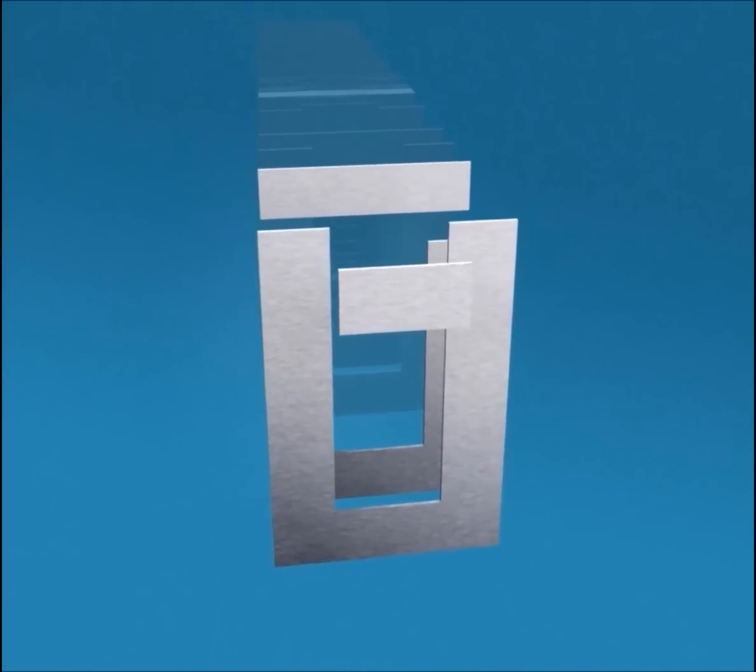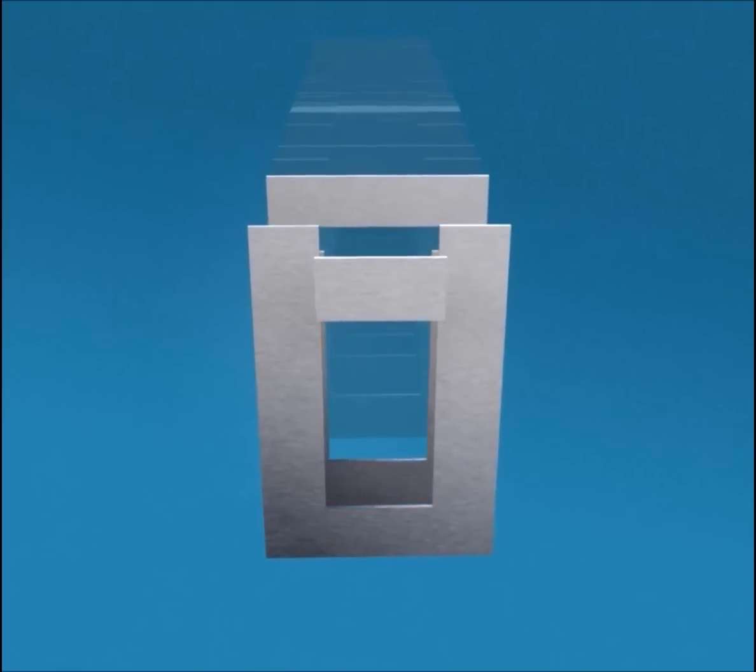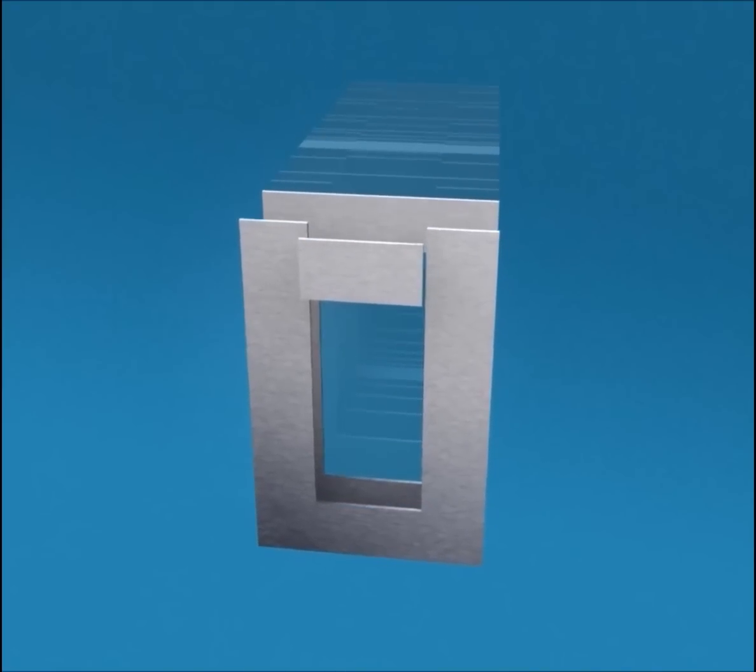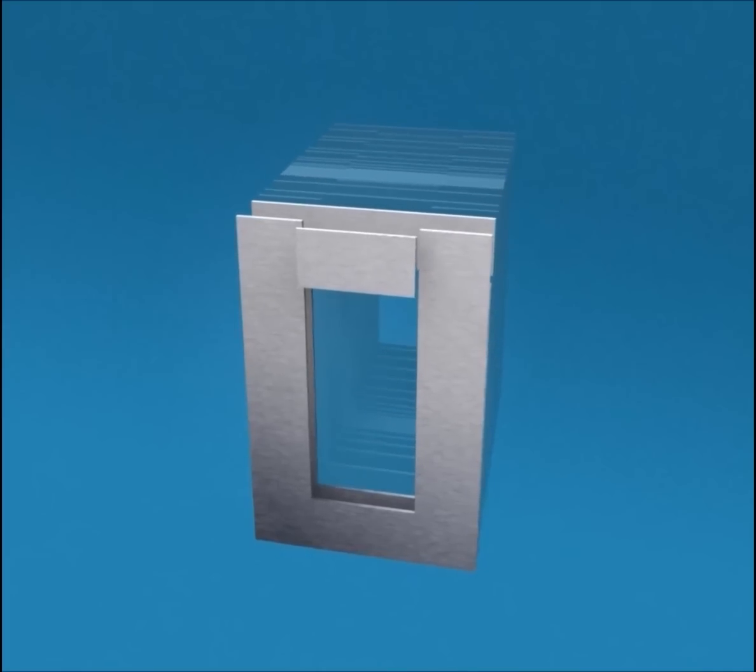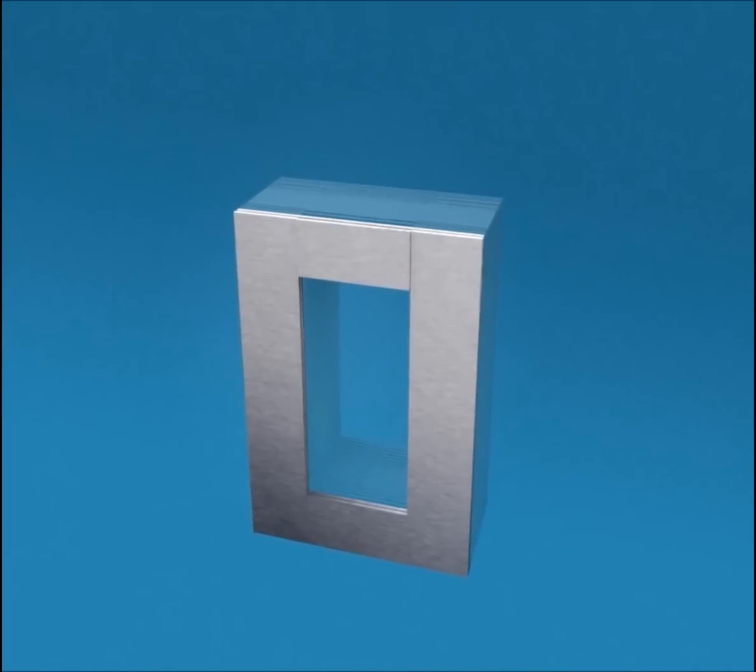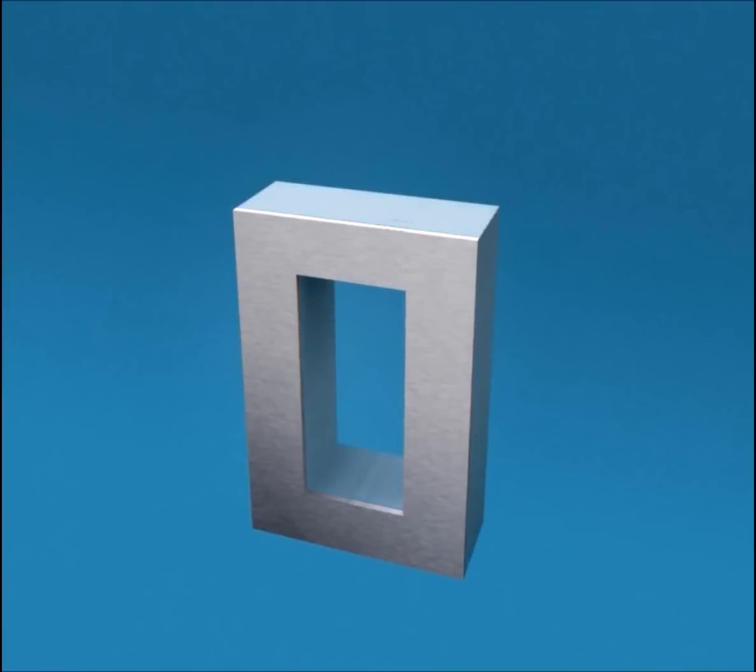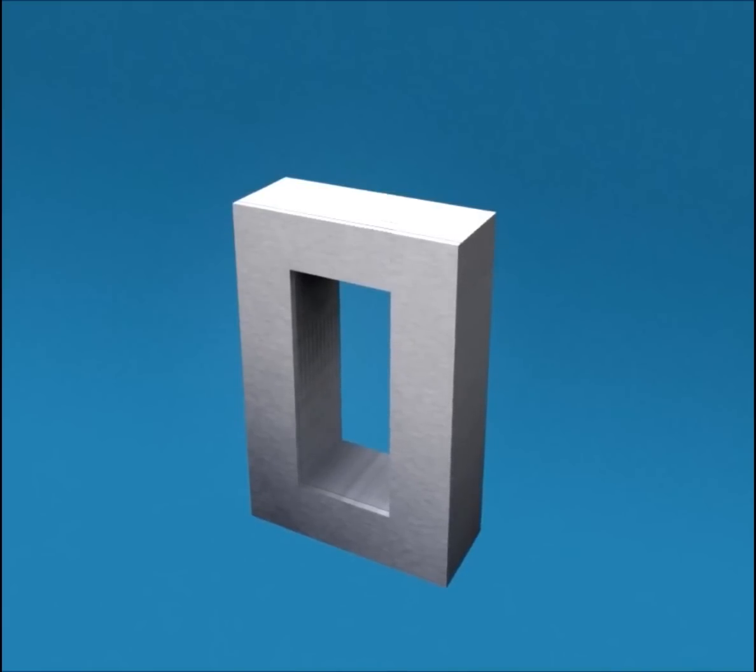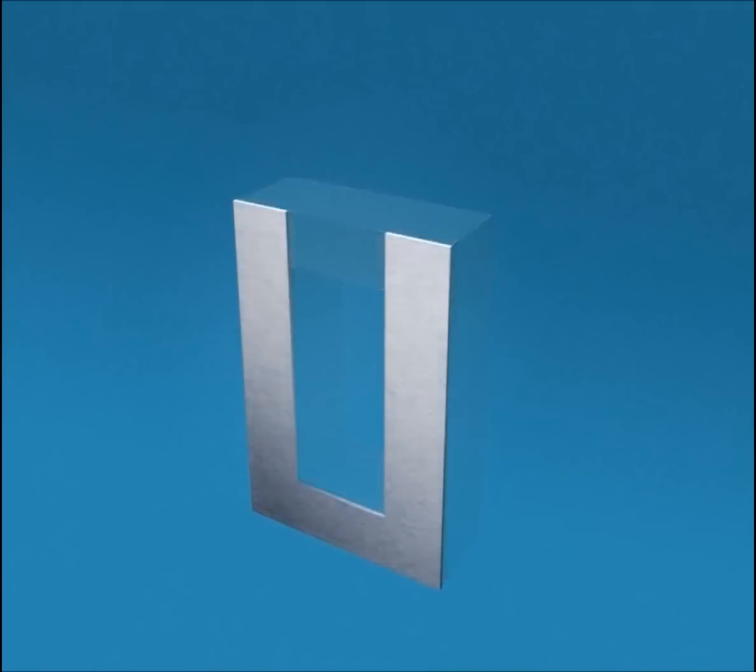To reduce these unwanted power losses, thin steel laminations are used to construct the transformer core. Laminations are made up of highly permeable material, that is silicon steel. These laminations are assembled together to build a solid core. The resistivity of the steel sheet itself is high, reducing the eddy current losses.